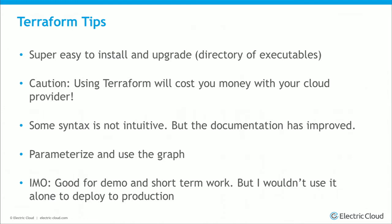The syntax got me at times. For example, security groups — you have to specify them as a list. After you find that out it makes perfect sense, but my first memory of Terraform was trying to set a straightforward string for the security group and it failed, because Amazon accepts multiple security groups for an instance and that's what Terraform wants. There's some syntax like that that may not be intuitive, but for the most part documentation has improved.